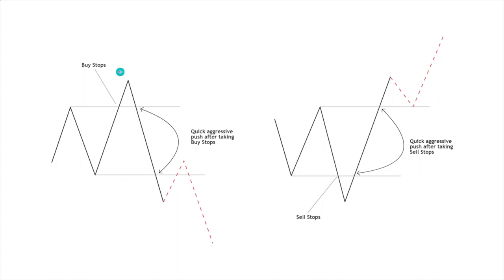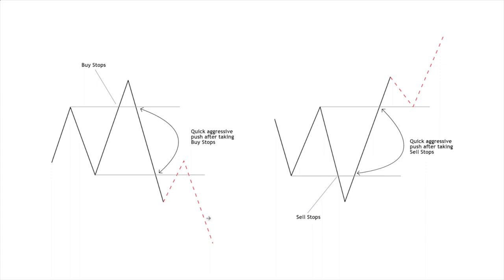Once this liquidity has been grabbed, price will aggressively push to the downside. Typically the push up is usually a very quick movement, and the push back in the opposite direction is usually very similar in magnitude. When price has pushed aggressively to the downside and comes back up, it taps into this price level to the left — this is where our breaker block would be. We'll be looking for either the breaker block or an area of imbalance that price will be attracted towards before the further push to the downside.